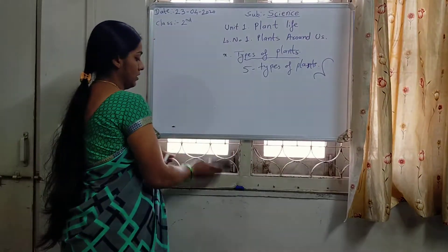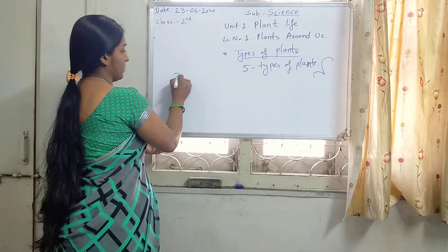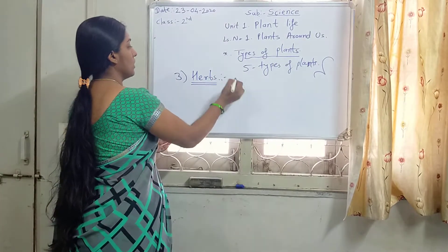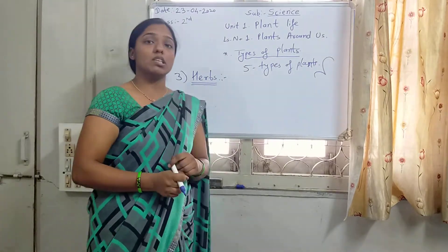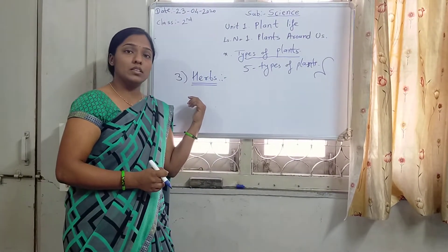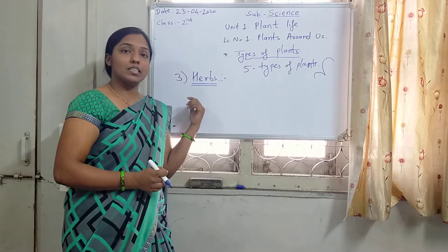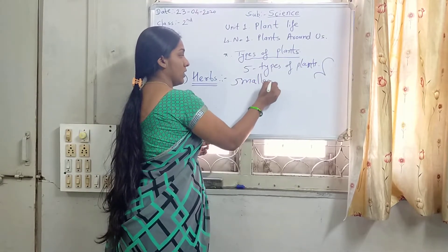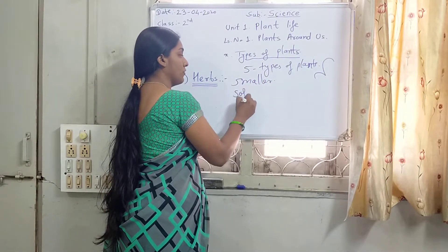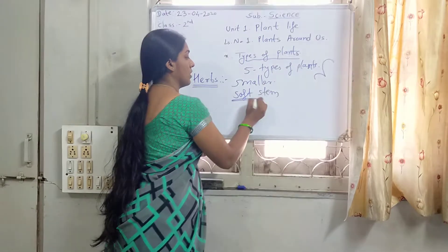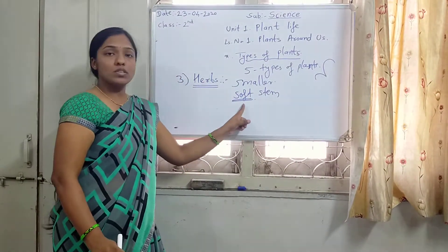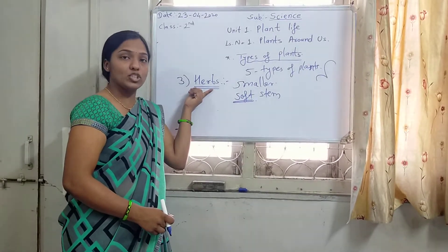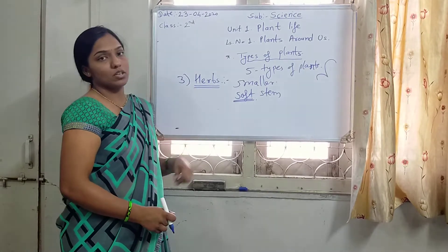The 3rd type is Herbs. You know the herbs our mothers use in the kitchen — Coriander, Mint, Spinach, Fenugreek. These are the examples of herbs. Herbs are very small and have a soft stem. Examples are Coriander, Spinach, and Fenugreek.